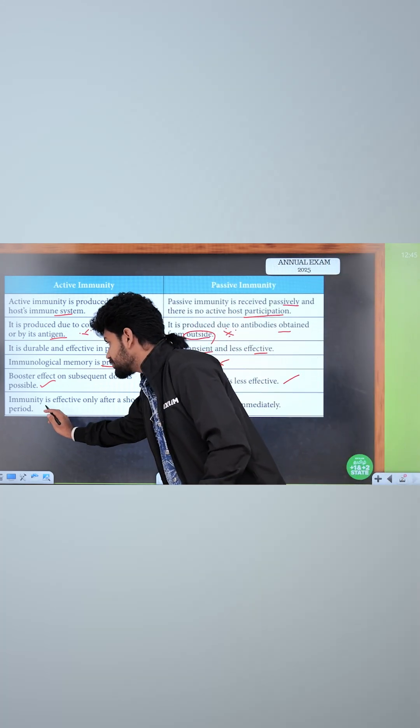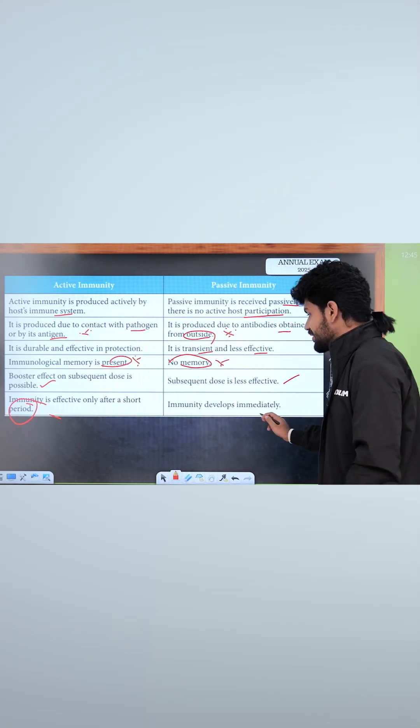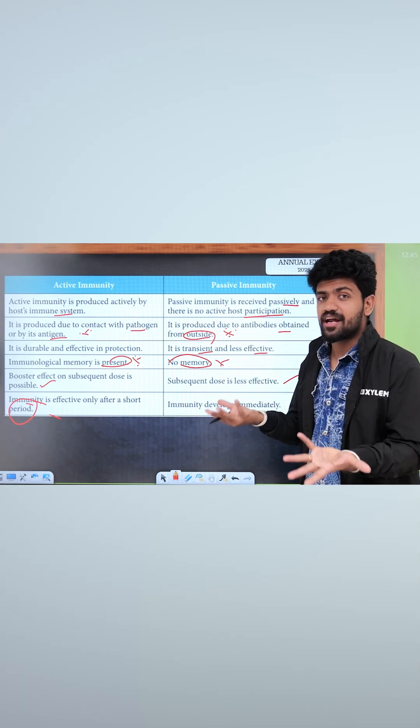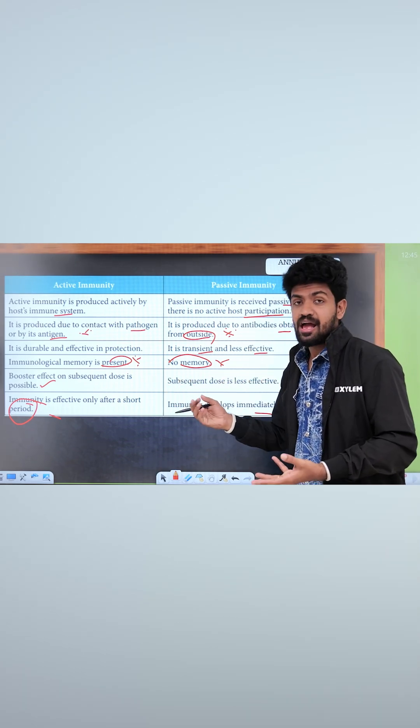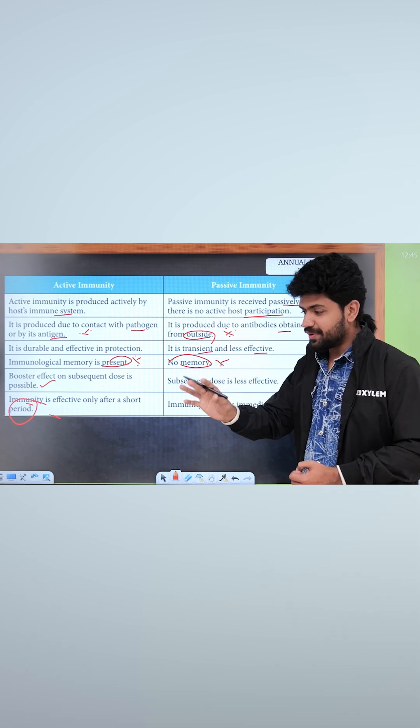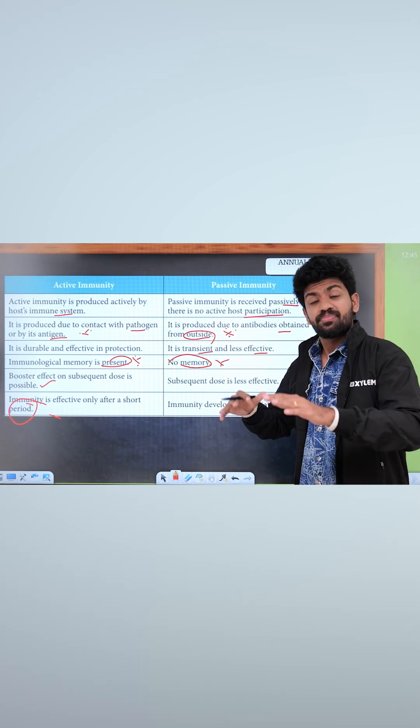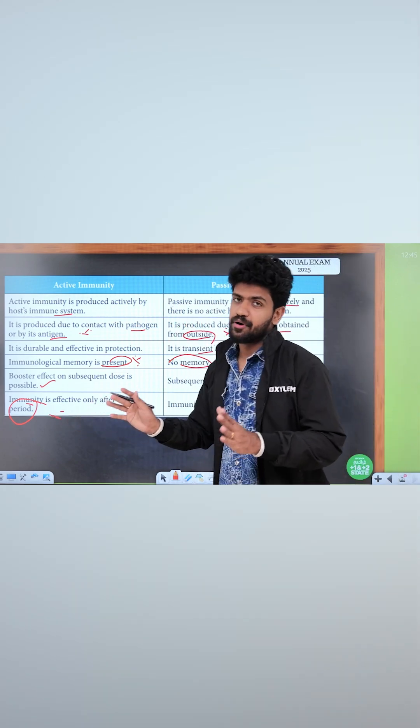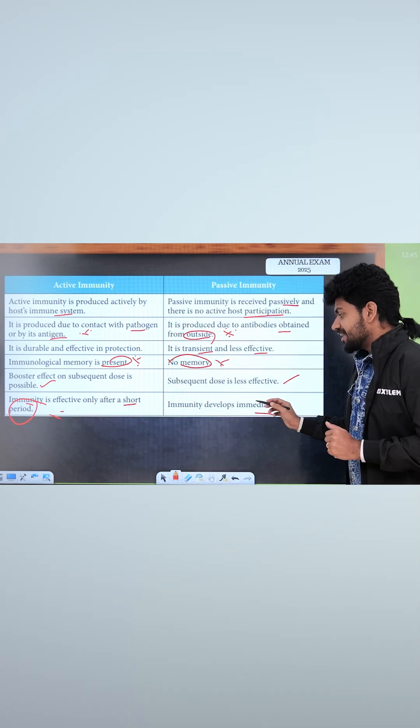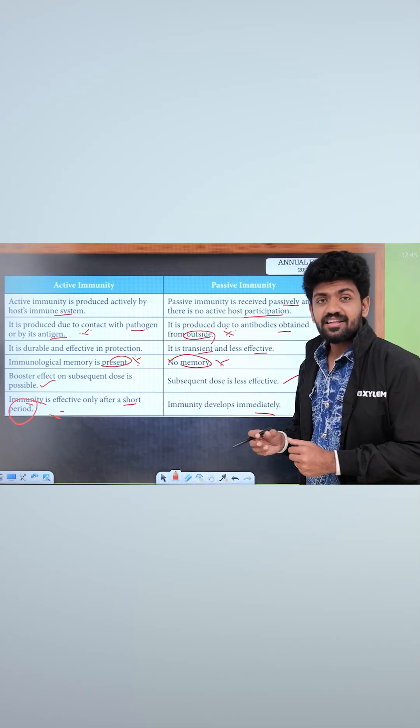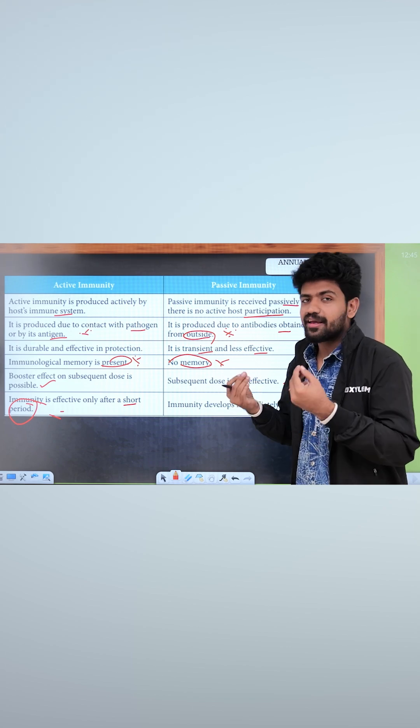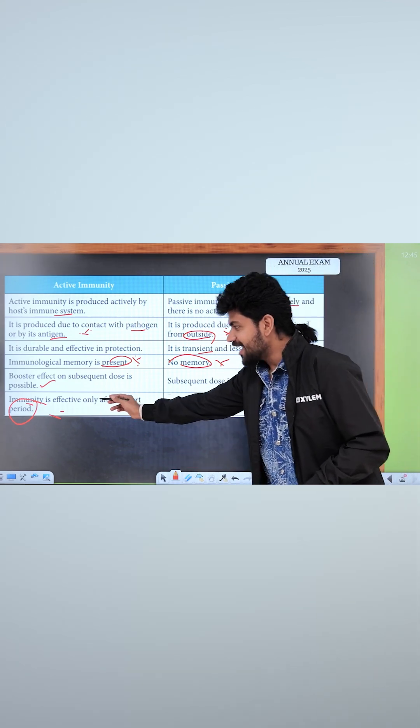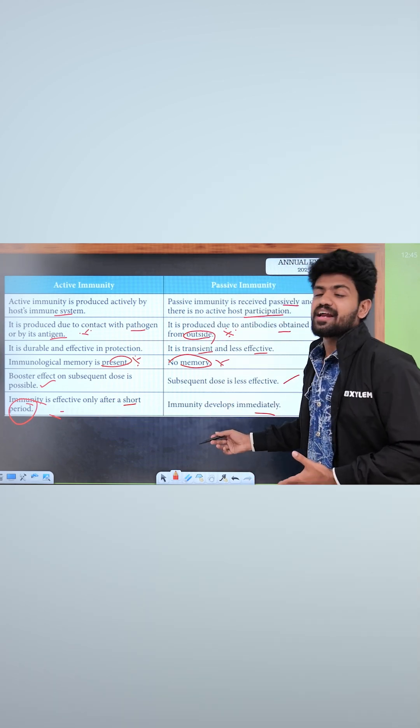Immunity is effective only after a short period. If you have an antigen, then immediately, I am an antigen. I am an antigen. If you have antibodies, then you can turn antibodies from your body. So, give me a little bit of time. You can say that immunity develops immediately. If I have an antigen, I am not giving you antibodies, they have no idea of antibodies. We can direct antibodies.